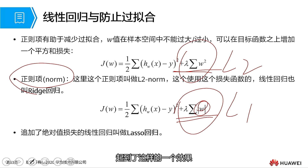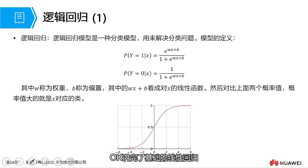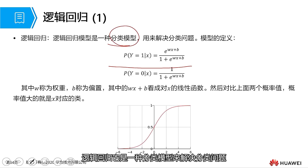That's the end of basic linear regression. Let's take a look at logistic regression. This is the mathematical formula for logistic regression. Logistic regression is a classification model, used to solve classification problems. It has intricate connections with linear regression — in other words, it is based on linear regression with one change made: the addition of the sigmoid activation function.